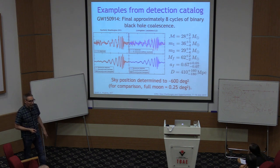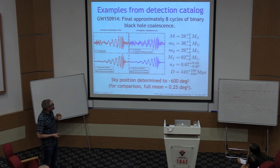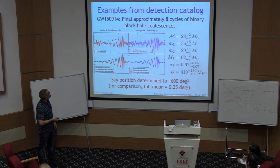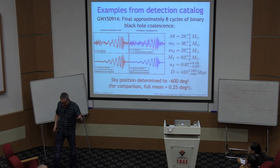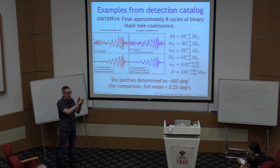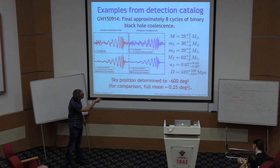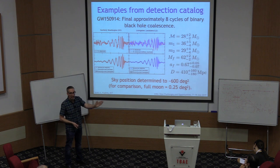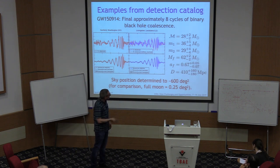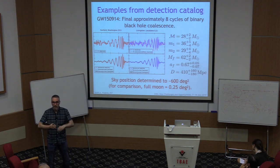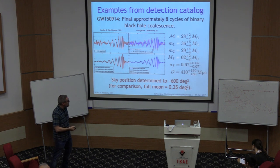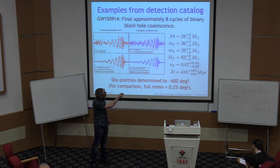For GW150914, there are about seven or eight cycles before coalescence and ringdown. Plotting frequency to the minus eighth power versus time, the slope immediately encodes the chirp mass. Using the full model — which builds in effects of total mass, mass ratio, and spins — we can determine individual masses of 36 and 29 solar masses, with a final mass of 62 solar masses.